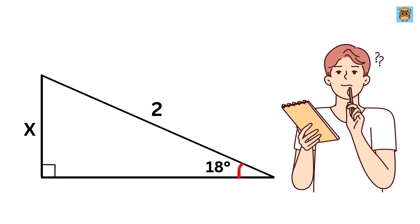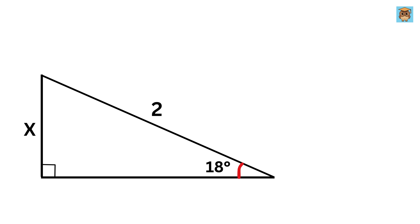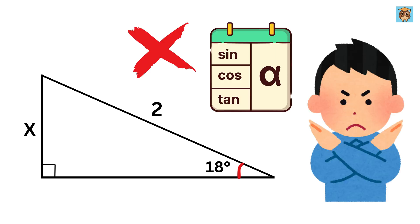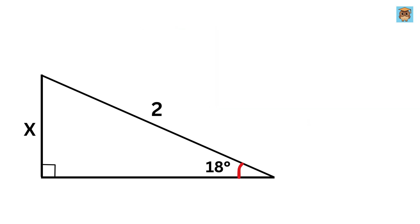Our job is to find the value of this x, but the catch is that we cannot use trigonometry. I know that we can easily find the value of x by using the fact that the sine of 18 degrees will be equal to x over 2, and thus x equals 2 times sine of 18.